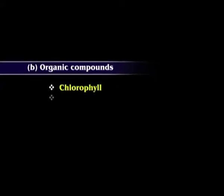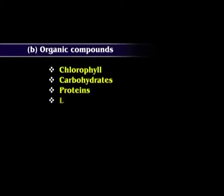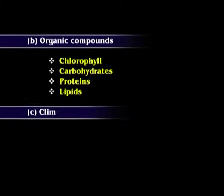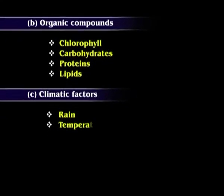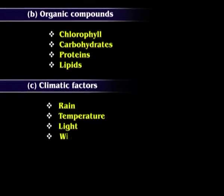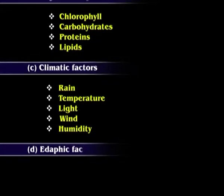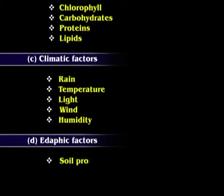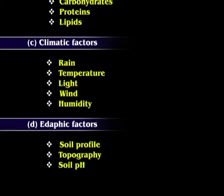B. Organic compounds present either in biomass or in the environment, for example, chlorophyll, carbohydrates, proteins, lipids, etc. C. Climatic factors that prevail in the area, such as rain, temperature, light, wind, humidity, etc. And D. Edaphic factors such as soil profile, topography, soil pH, etc.